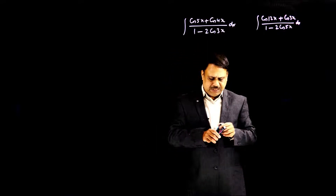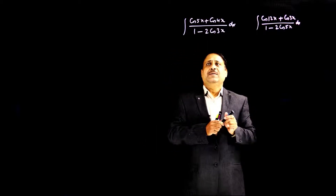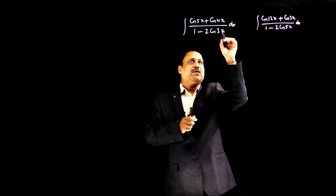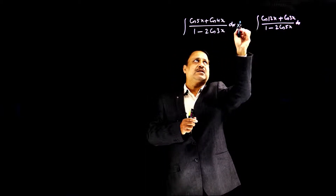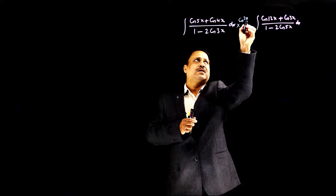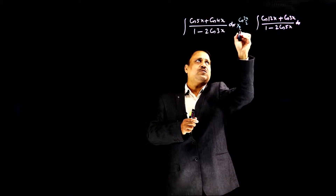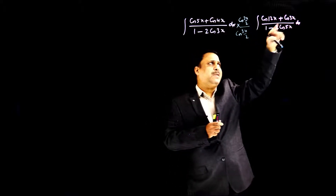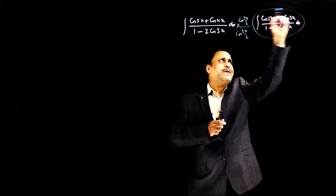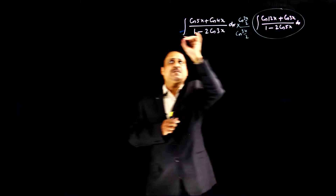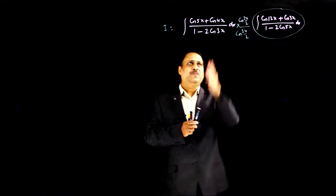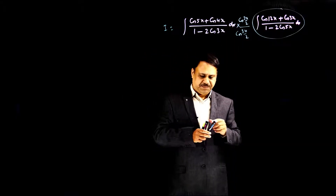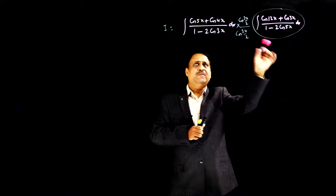In these questions, the method is: we will multiply and divide by cosine of half of the denominator angle — that is, cos(3x/2). For the second example, we would multiply and divide by cos(5x/2). I am explaining the first problem; you can solve the second the same way. You have to approach exactly the same way.